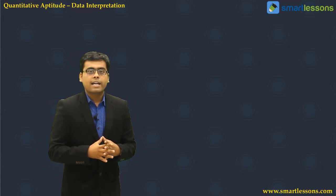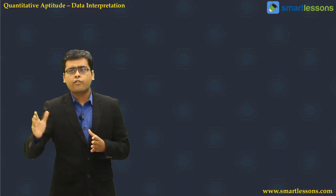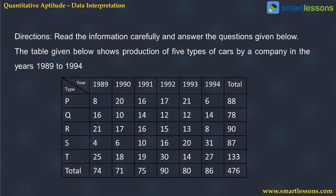Now let us understand how to analyze the given representation. You can have different types of nonverbal representations, and we will be looking into these different types one by one. The first one is a data table. As you can see on the screen, a table is given. The directions are clearly mentioned: read the information carefully and answer the questions given below. The table shows production of five types of cars by a company from 1989 to 1994.